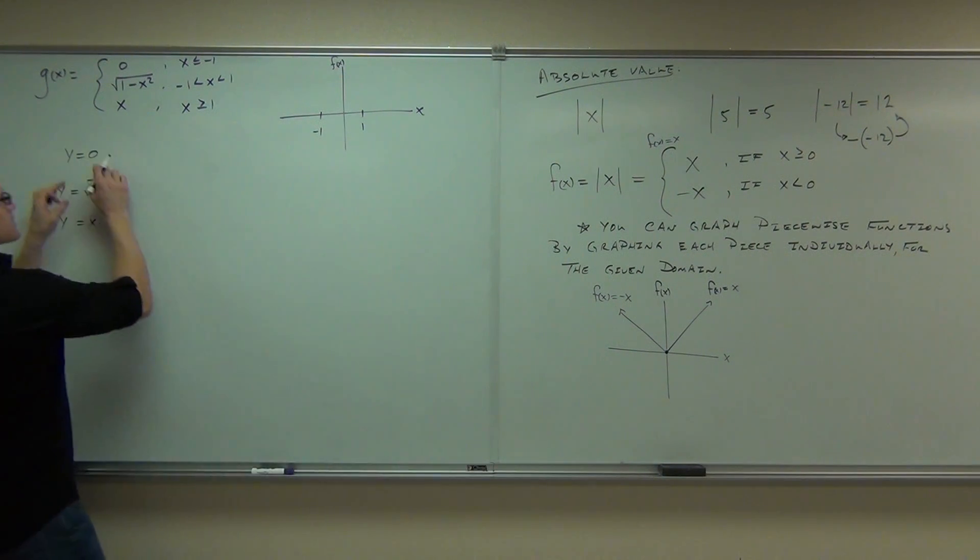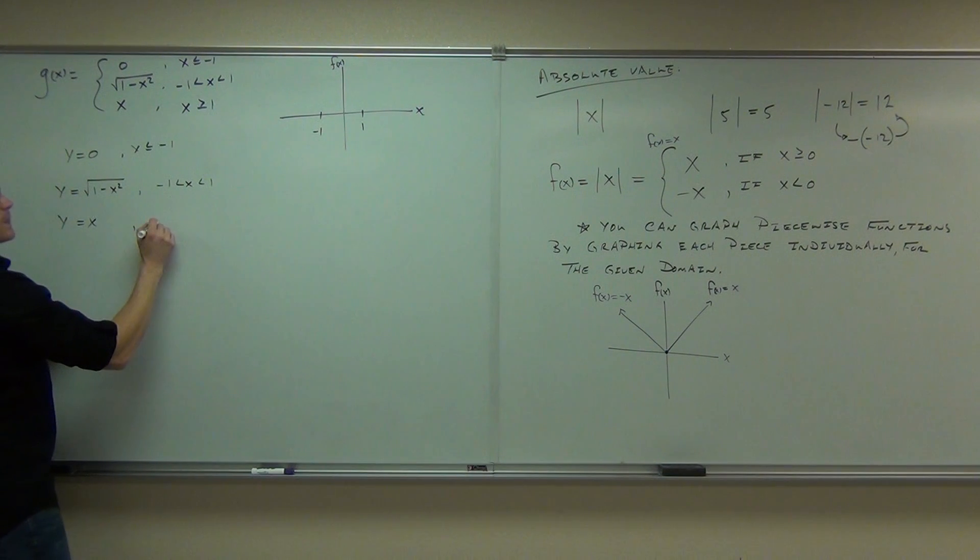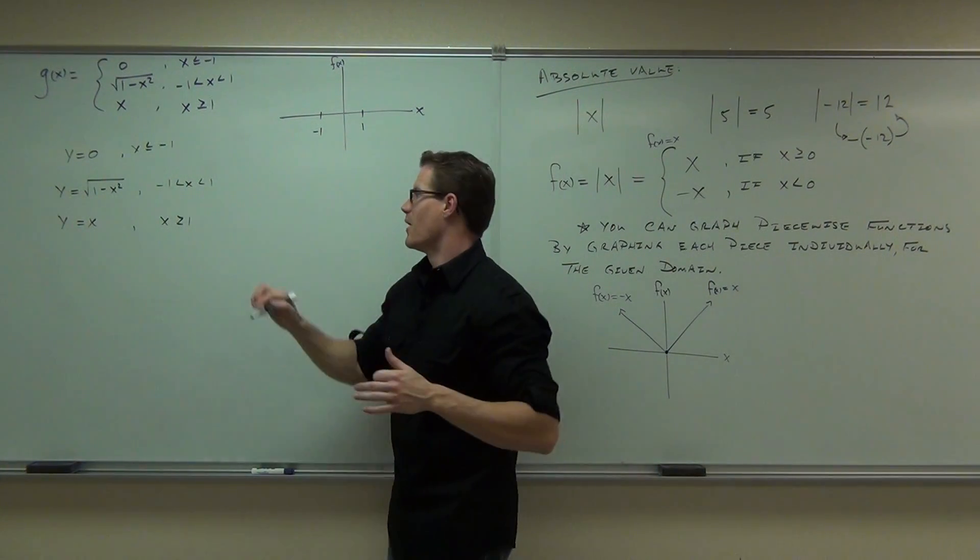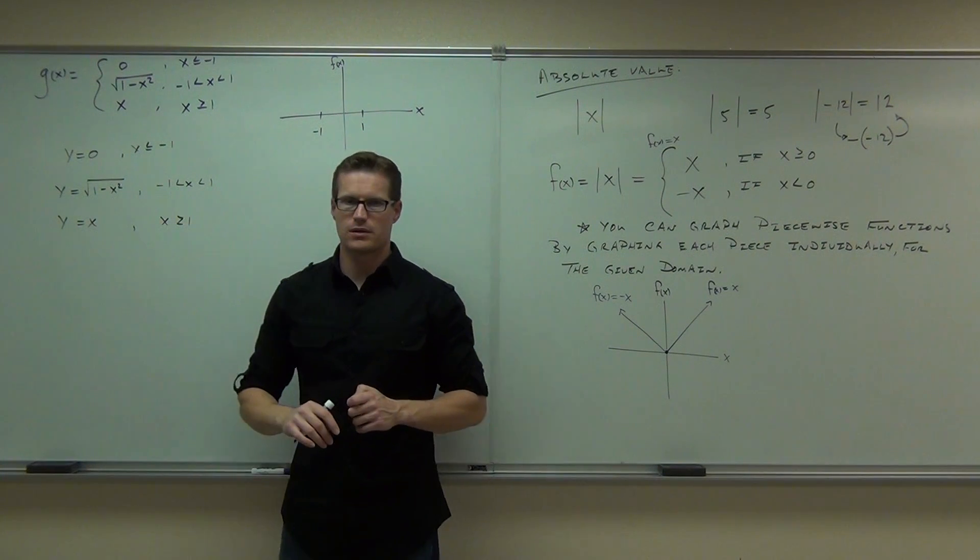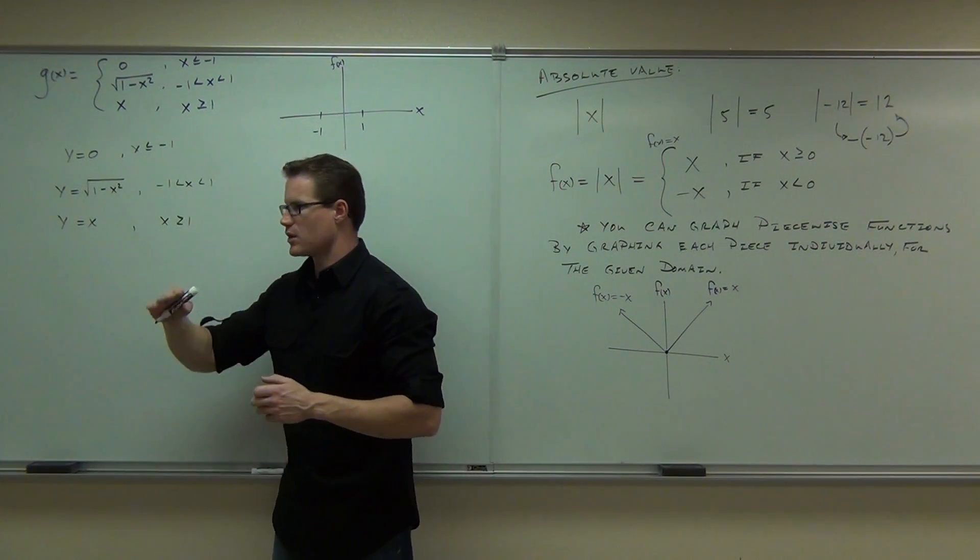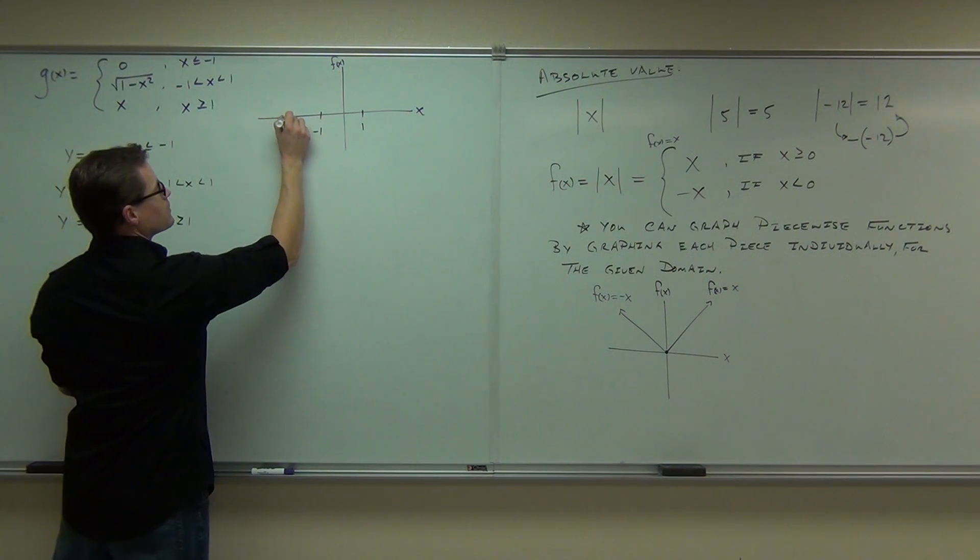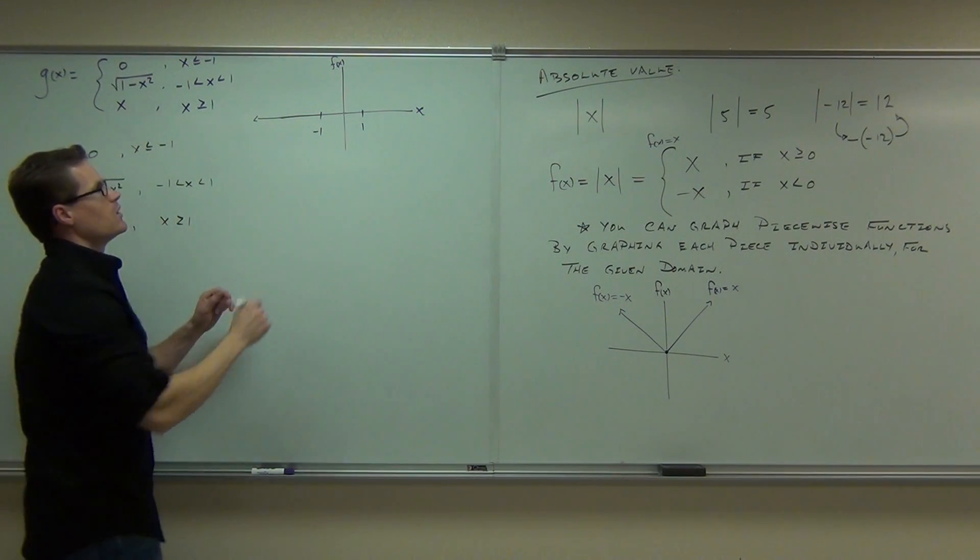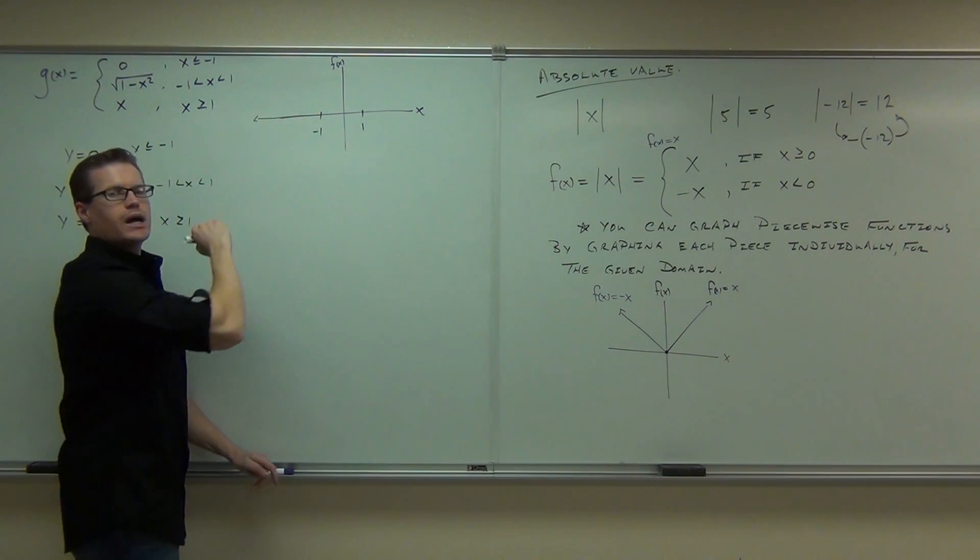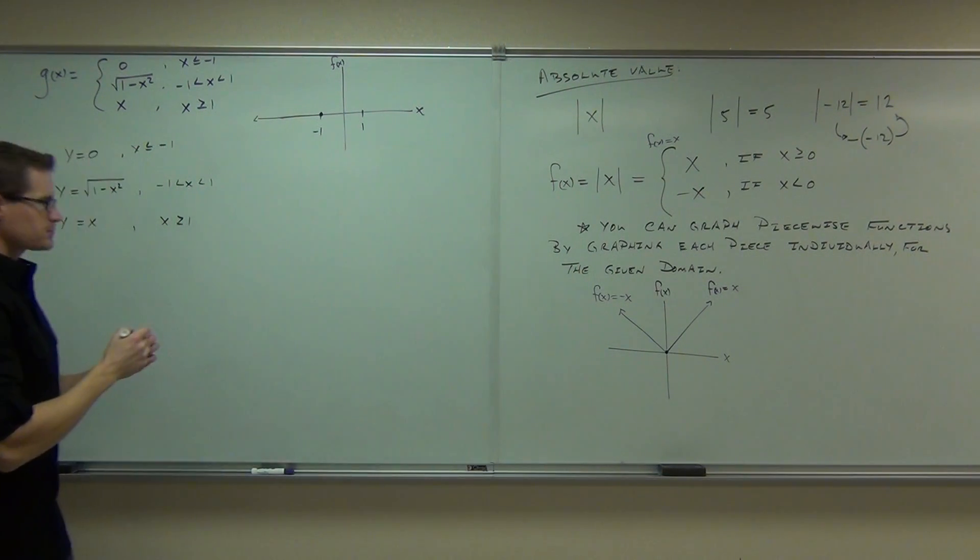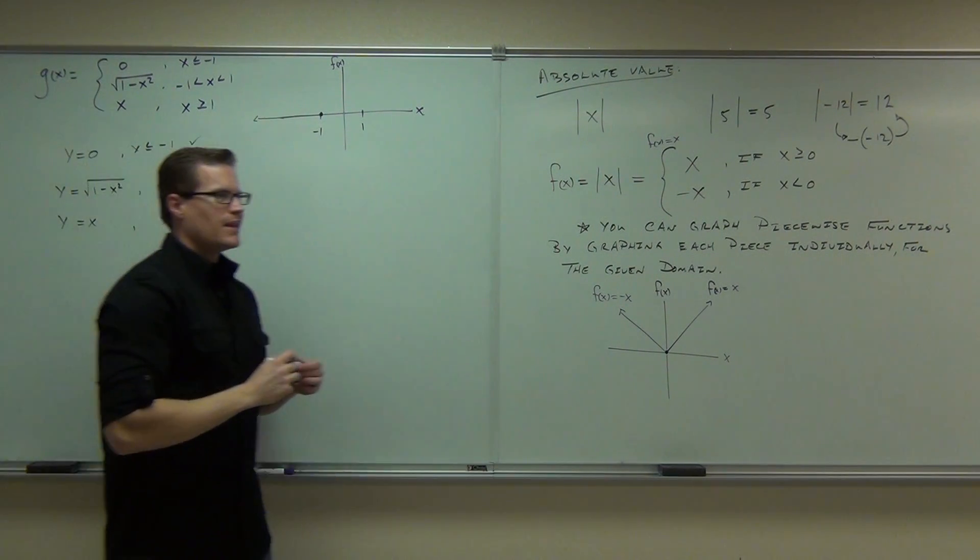This is the piece that's working where your x is less than negative one or equal to it. This is the piece that's working when you're between negative one and one. And this is the piece that's working when you're greater than or equal to one. So what does y equals zero look like? That is the x-axis. That's a horizontal line at y equals zero. Y equals a constant, we talked about that last time, it's a horizontal line. So we're talking about this right there. One question I have for you: should I have an open circle or a closed circle here and why? A closed circle. And why? Equal to the circle. Good, very good. Okay, check. Got it.